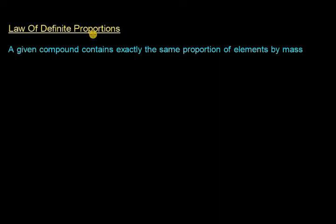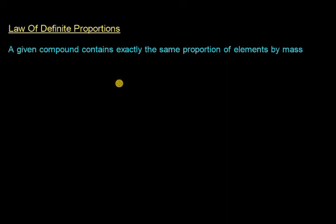This is the Law of Definite Proportions. Today it seems very simple, but back two or three centuries ago chemists did not really understand the composition of compounds and chemicals, and hence this law was postulated. The statement of the law is: a given compound contains exactly the same proportion of elements by mass.